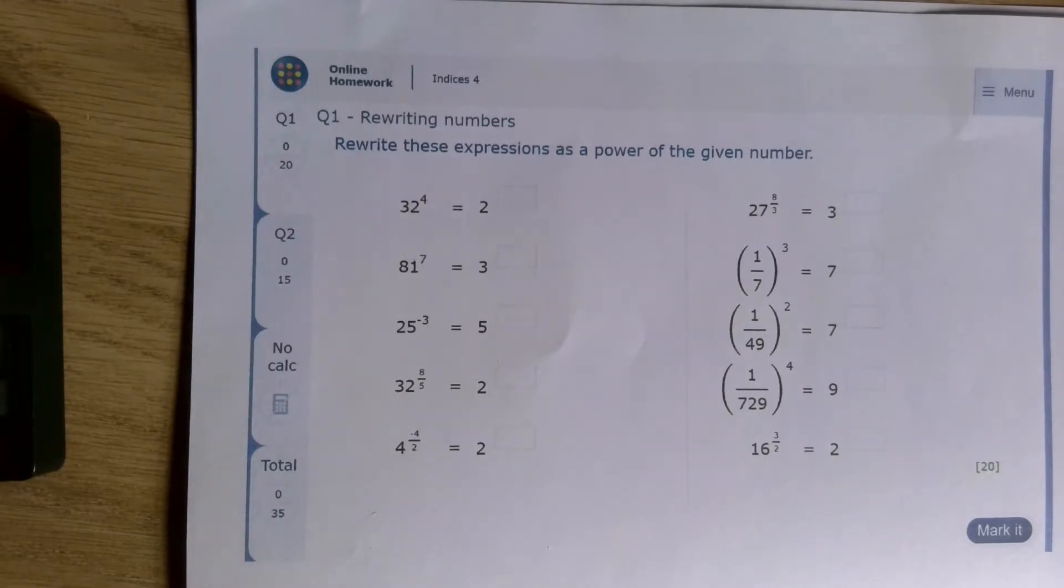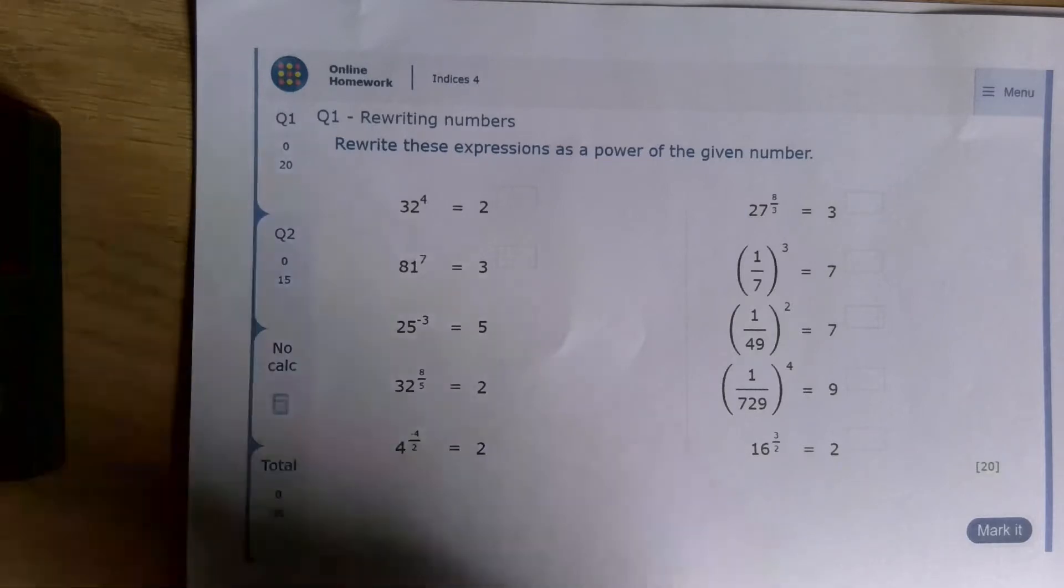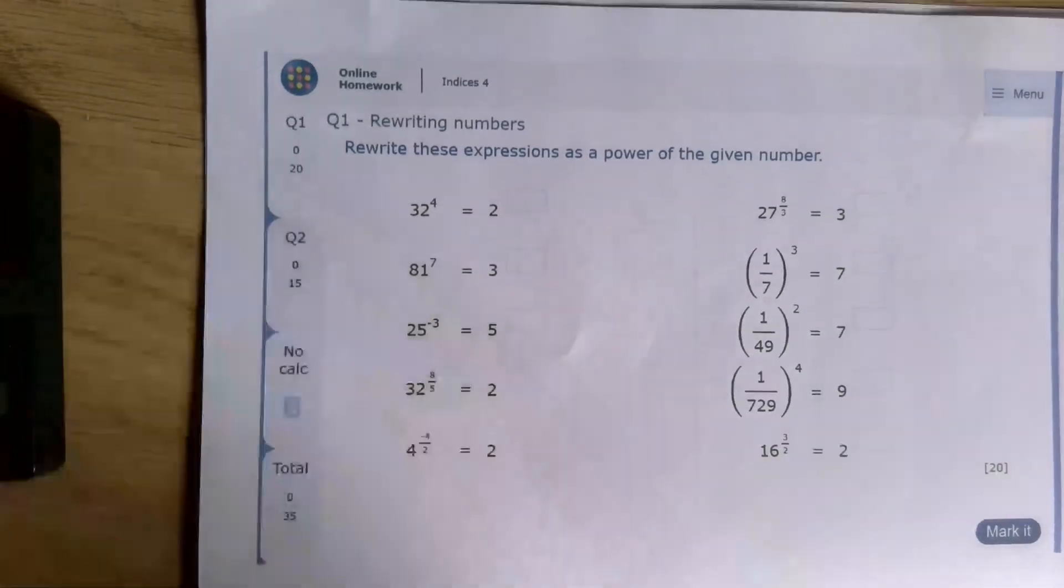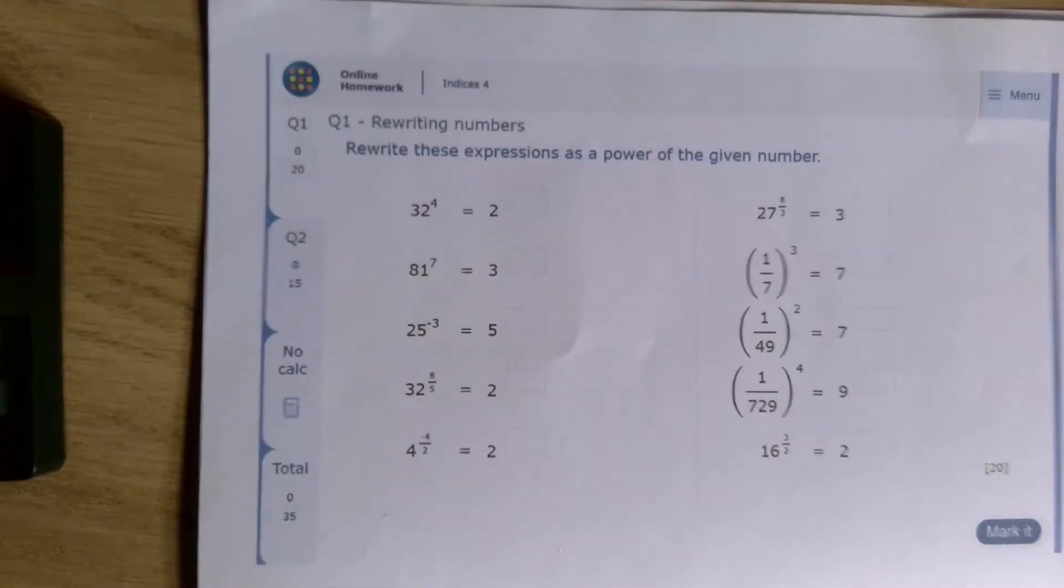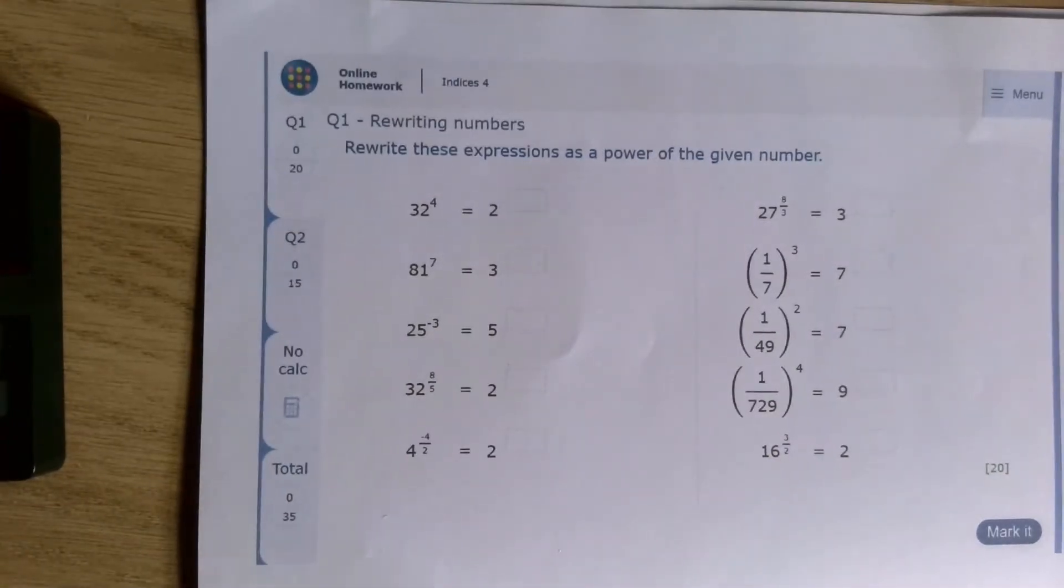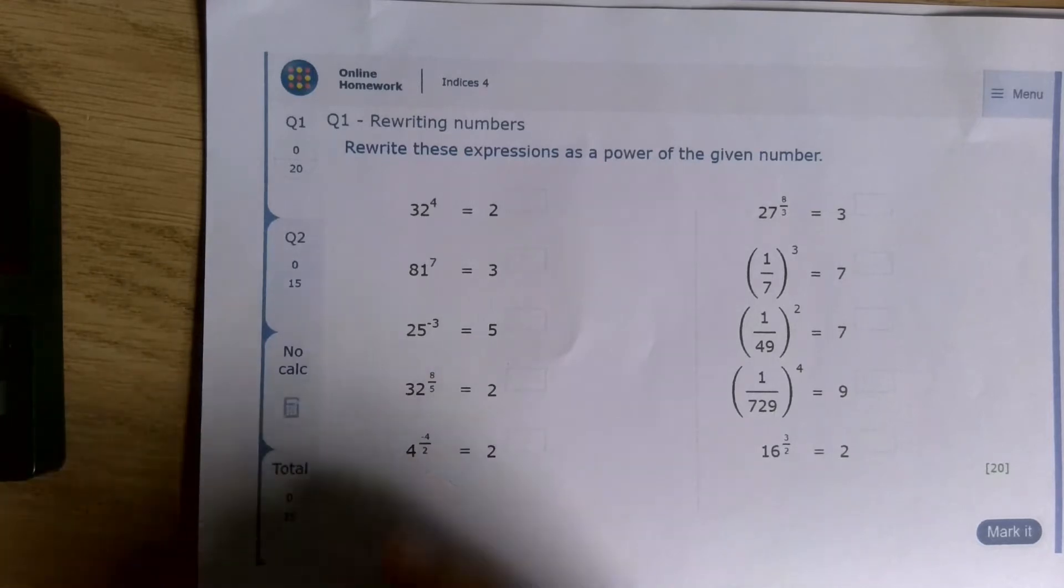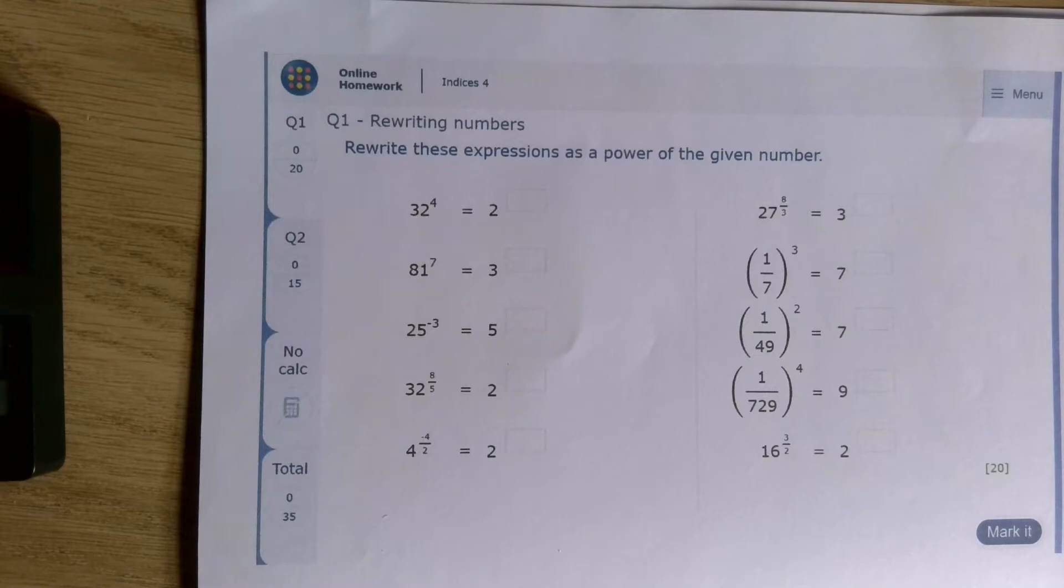When we have a fractional power, the numerator is a normal power. So in this case, this means to the power of 8. The denominator is a root, so this means the fifth root. Sometimes you get all 3 combined in 1. When we have a negative power on a fraction, it means to find the reciprocal fraction, which means to flip the fraction.